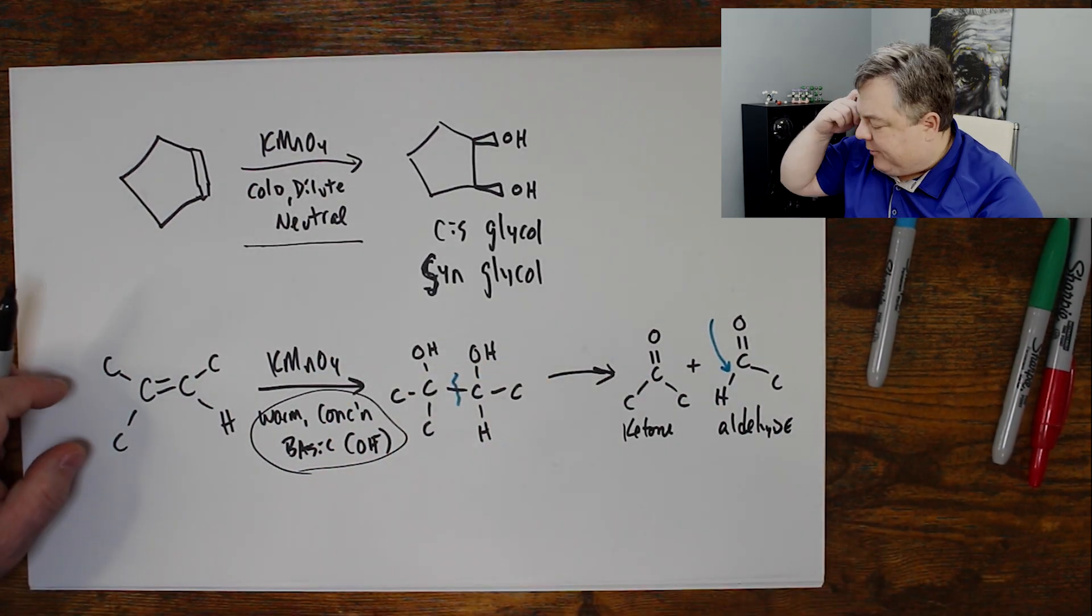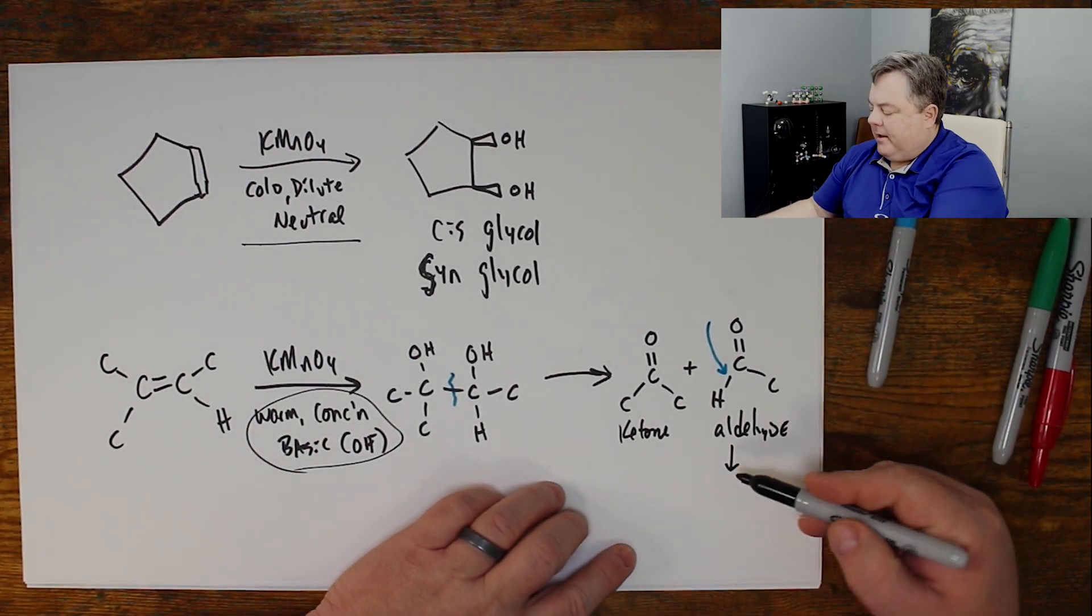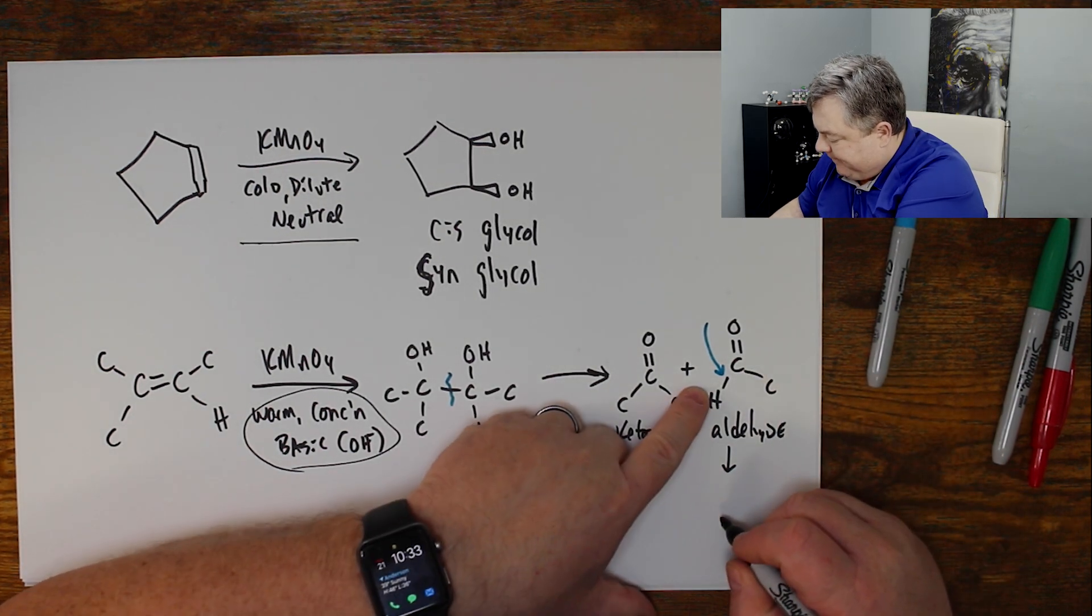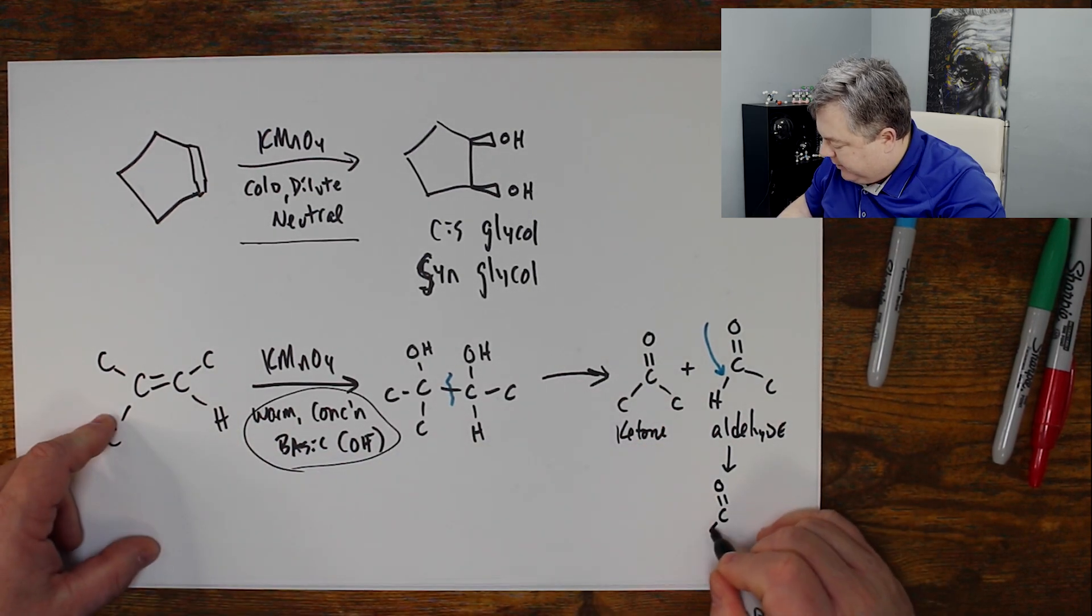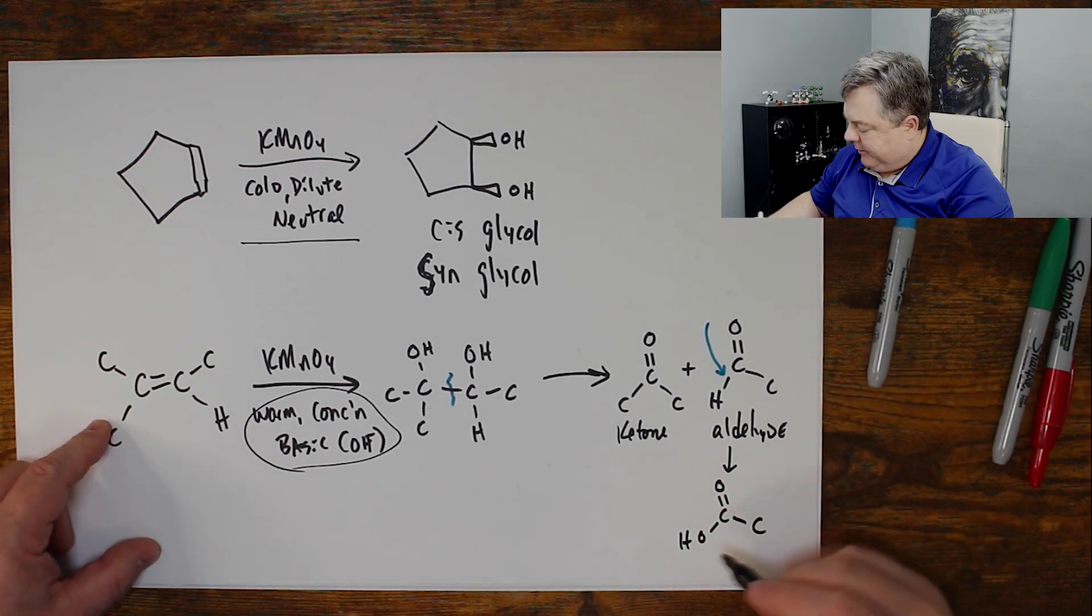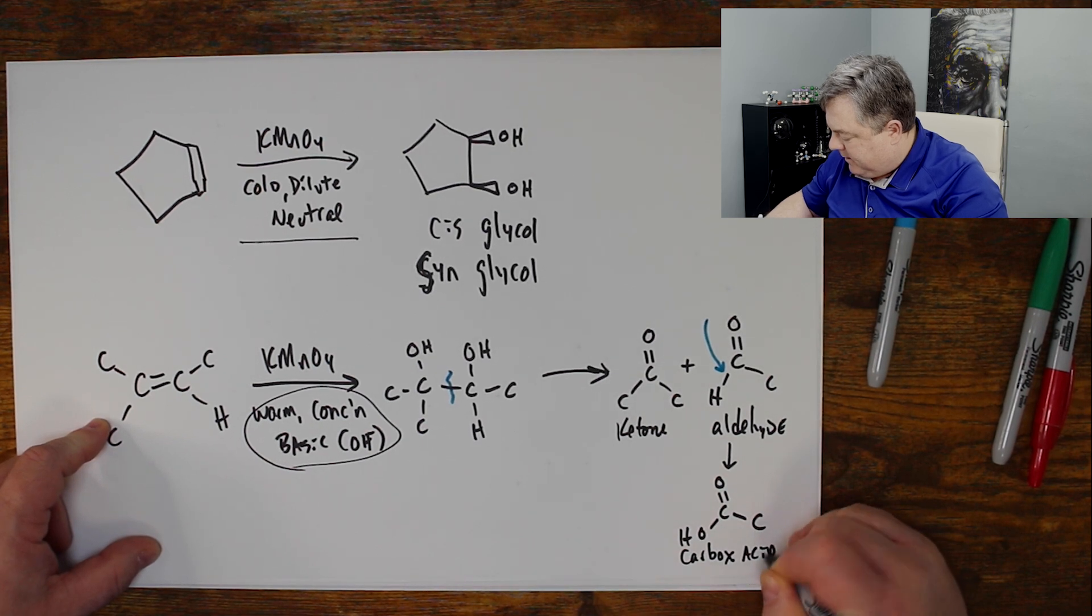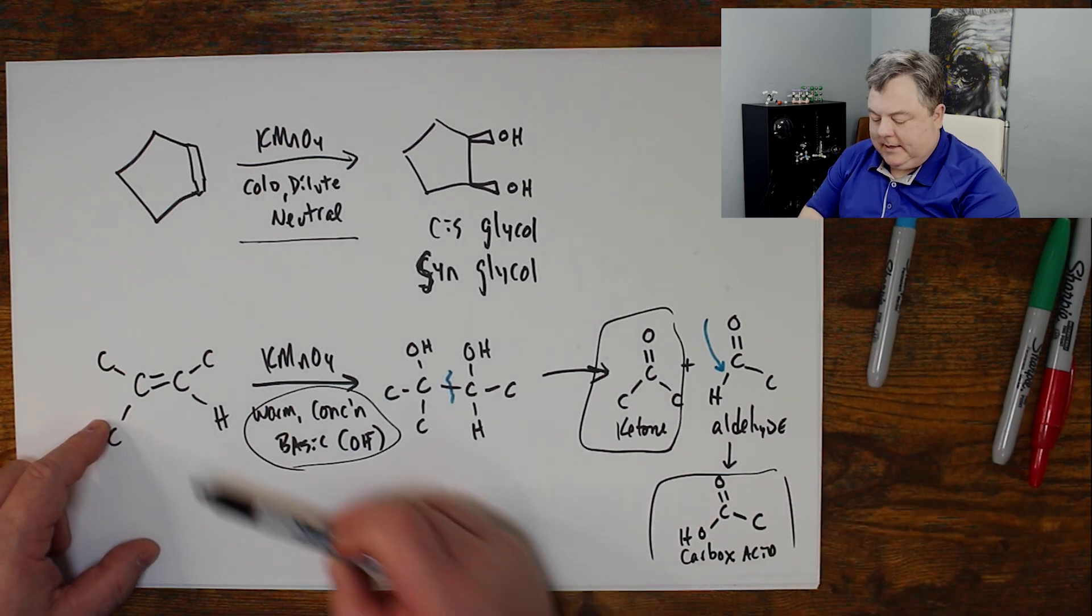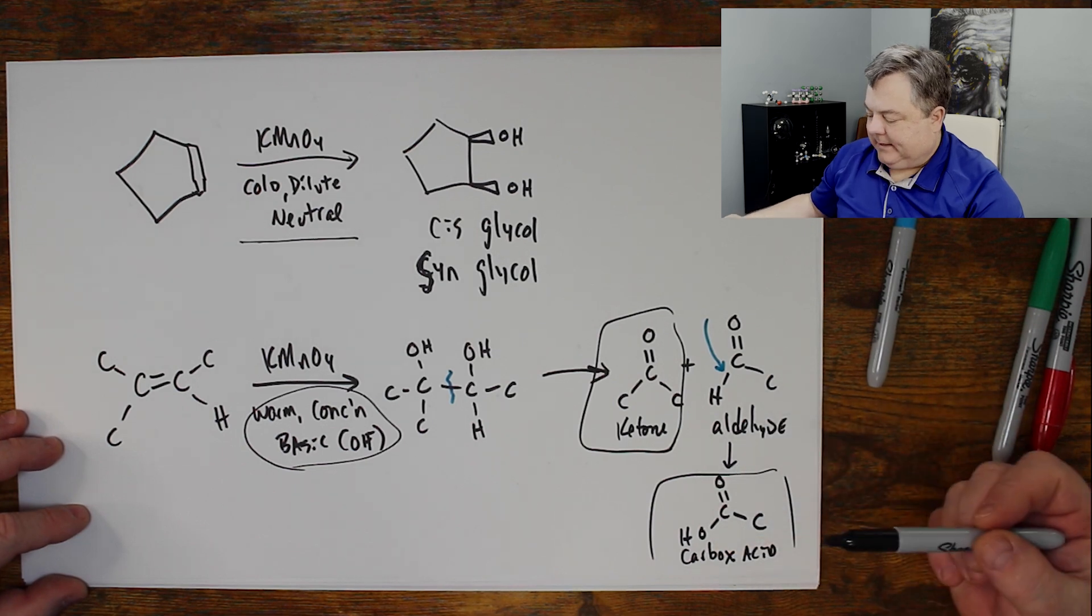When I see KMnO4, I just have to remind myself that's a strong oxidizer. It'll keep going. So aldehydes go from two carbon-oxygen bonds to three carbon-oxygen bonds. I'll insert one more oxygen in that spot. My carbonyl gets an OH. So aldehydes become carboxylic acids. This ketone and this carboxylic acid is what would happen when I cleave this alkene and fully oxidize it.